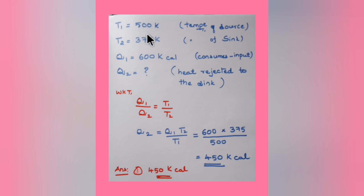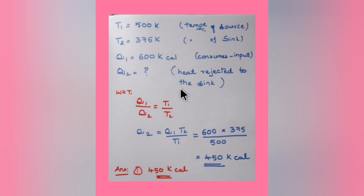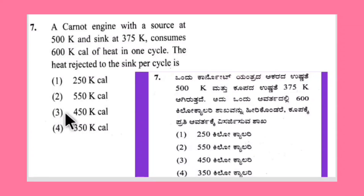The given values are: temperature of source T1 = 500K, temperature of sink T2 = 375K, and Q1 = 600 Kcal consumed. We need to find Q2, the heat rejected to the sink. Using the direct formula Q1/Q2 = T1/T2, making Q2 the subject and substituting, we get option number 3: Q2 = 450 Kcal. This is the right answer for question 7.